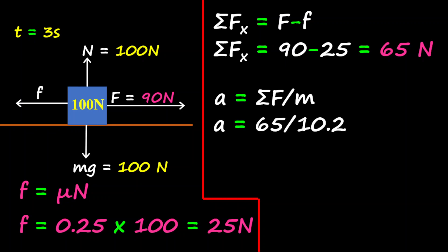So therefore, the acceleration is equal to 65 divided by 10.2. Where do we get the 10.2 from? It is the weight, which is 100, divided by gravity, which is 9.8, and so we get 10.2. So therefore, acceleration is equal to 6.37 meters per second squared.